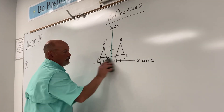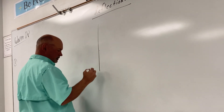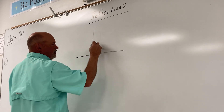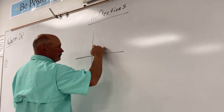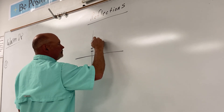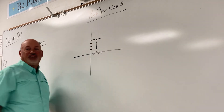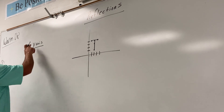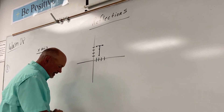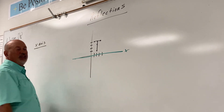Let's do another one — what if we have the letter T? Let's reflect the letter T. This time we're going to switch it up: let's reflect it across the x-axis. The x-axis is here — we're going to flip the letter T over the green line.